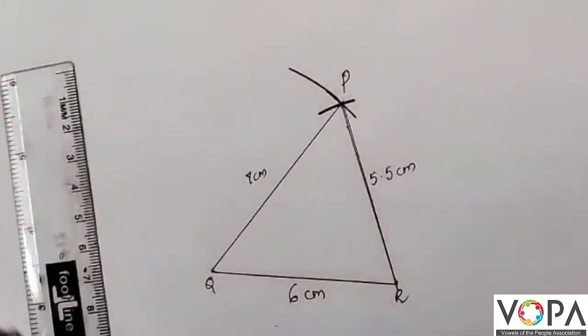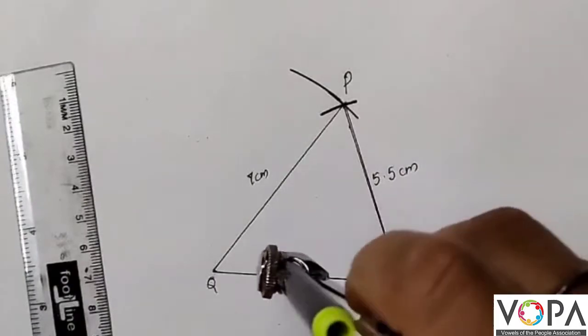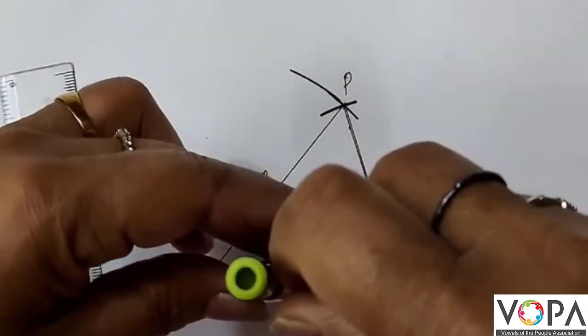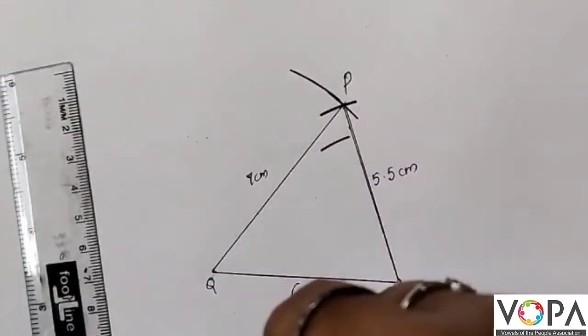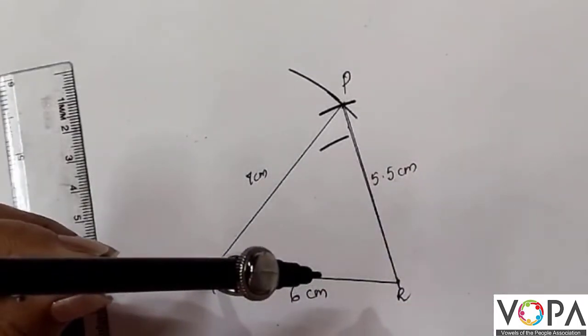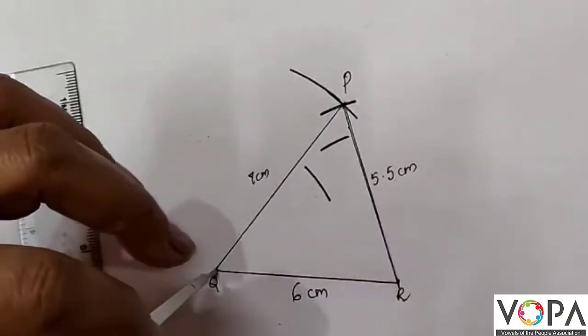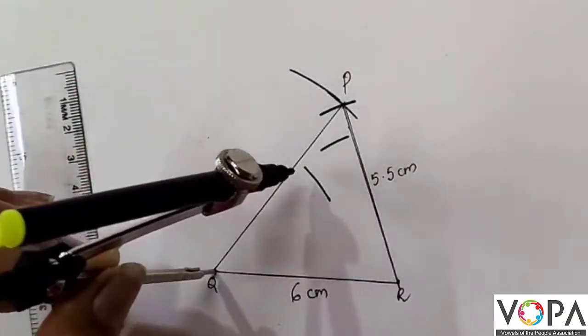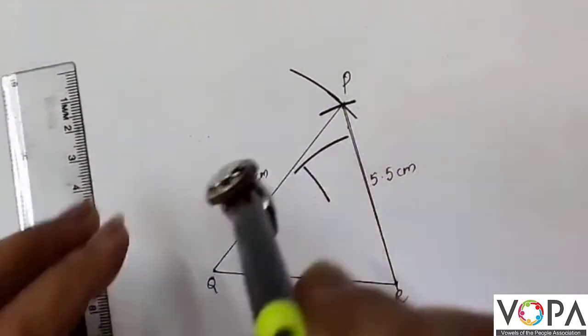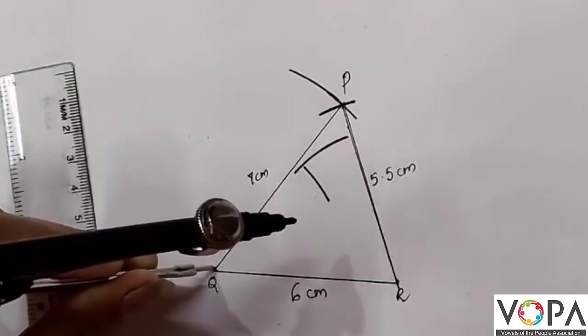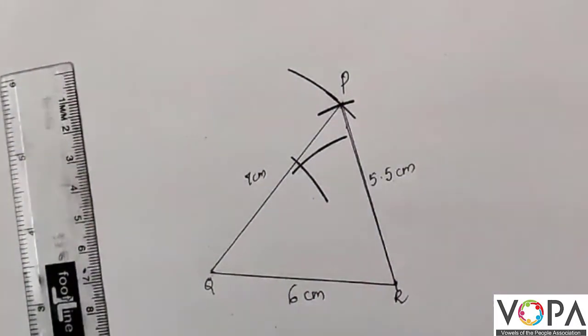Now to construct the circumcircle, we have to draw the perpendicular bisectors of any two sides. So I am taking QR here. Cut two arcs in the same way, up and down you have to draw two arcs.